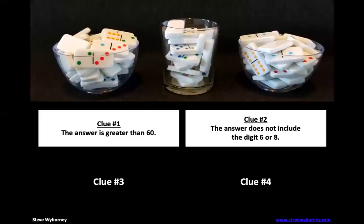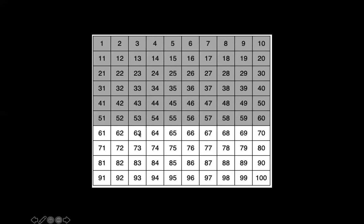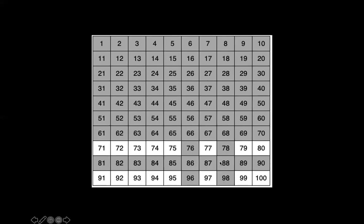All right, let's take a look at the second clue. The second clue says it does not include the digits six or eight. Now what's important about this clue is it's not saying it doesn't end with a six or an eight. It says it does not include the digits six or eight. So that means there can't be a six or eight in the ones place or the tens place. So if we look at the ones place, we would get rid of everything in this column because they end with a six, everything in this column because they end with an eight. Now we should also get rid of the ones where a six or an eight are in the tens place. Can you see those rows? Yep. So we'd get rid of this row and we'd get rid of this row. So we want to get rid of anything with a six or an eight in it.